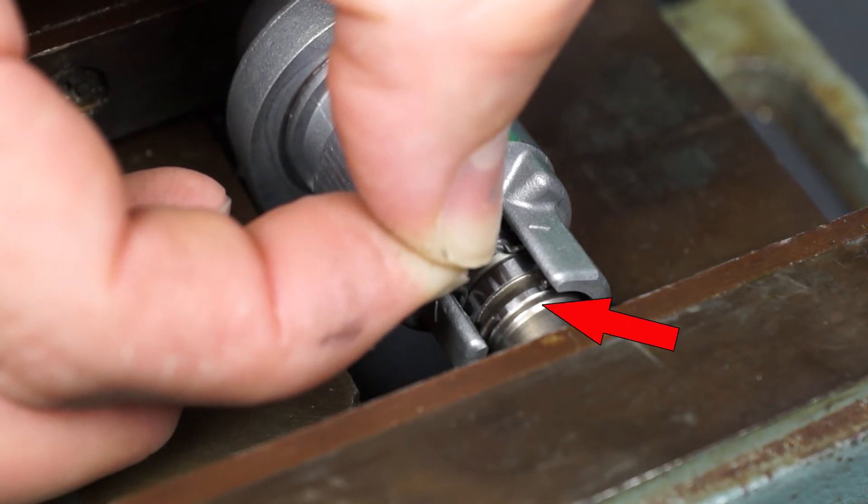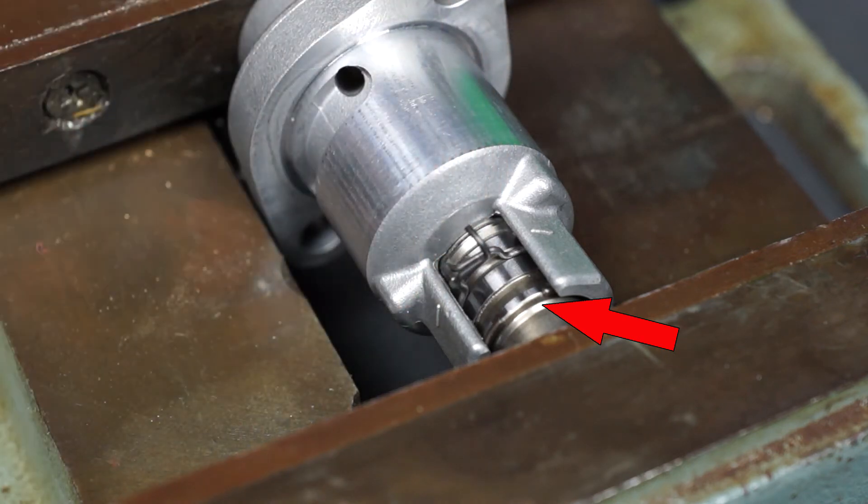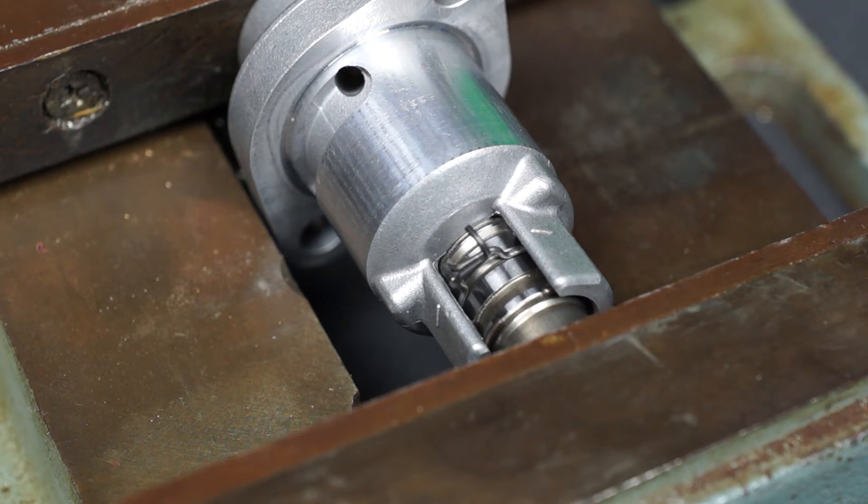As the tensioner rod is pushed further into the housing, the circlip will become wedged into the end of the housing and will be moved onto this section of the tensioner rod. This will lock the tensioner rod in place in the housing.